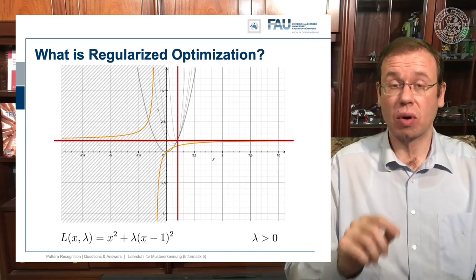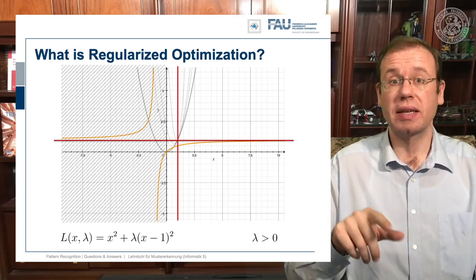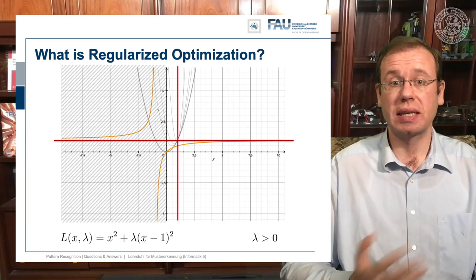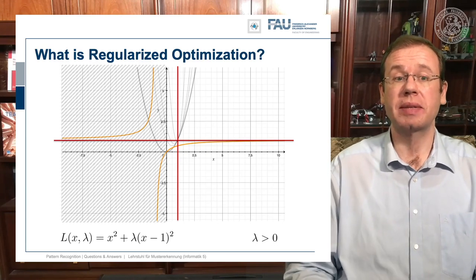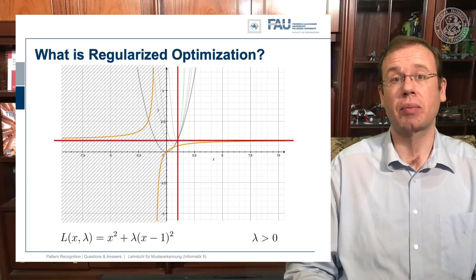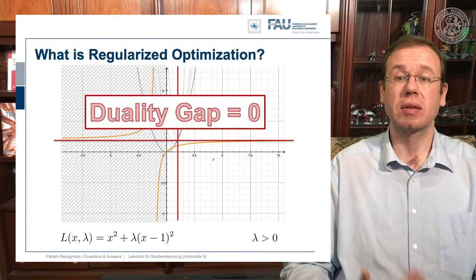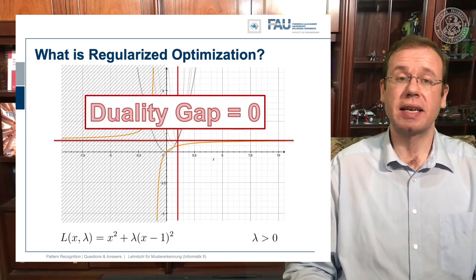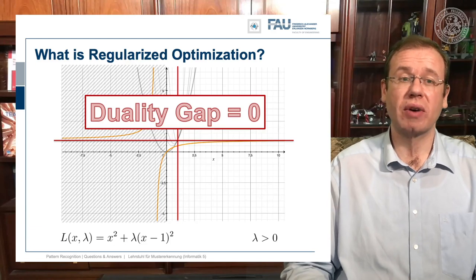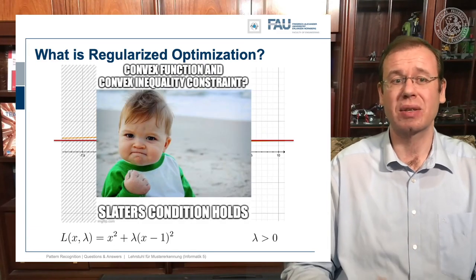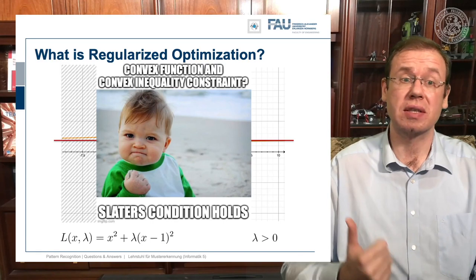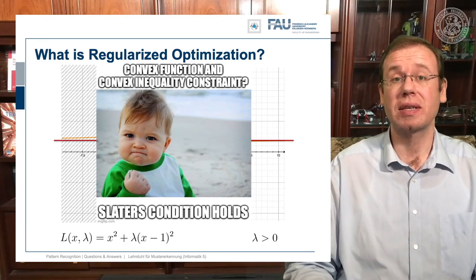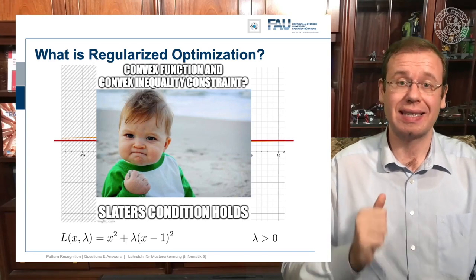This means we have a strong dual problem again — strong convexity. The duality gap is exactly zero. If you are attending our lecture, you will also find the concept of Slater's conditions: if you have convex functions and convex inequality constraints, then Slater's conditions hold and we have strong duality.